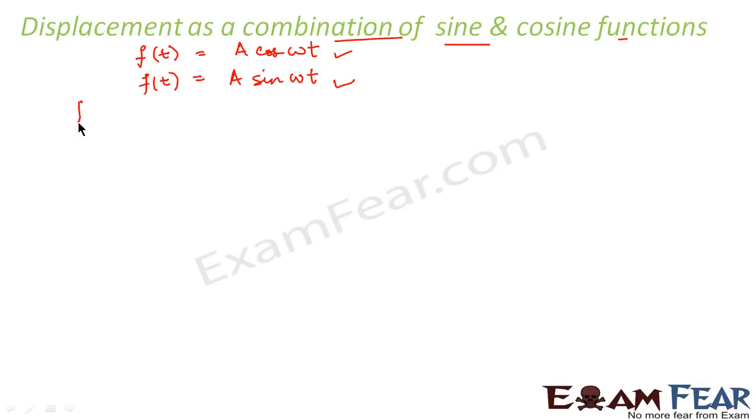So, that means displacement can be represented in this form: A sin ωt plus B cos ωt. It is a combination of a sine function and a cosine function. But, now you would ask me that how will I know that any function which is represented by an equation of this form is equivalent to something which is represented in this form or this form.